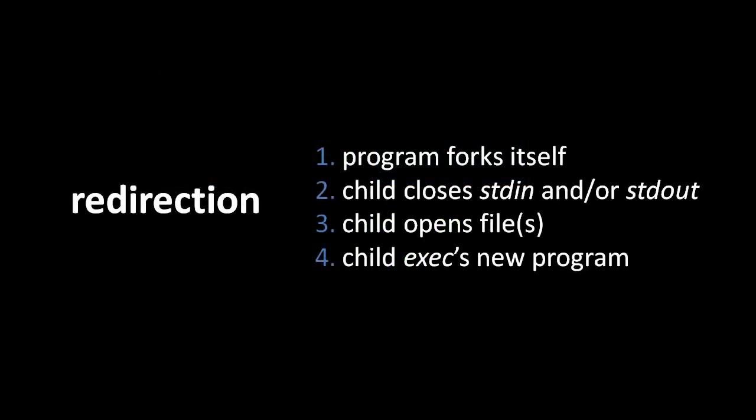Assuming you start with a program like the shell that has its standard in and standard out open to a terminal, if that program is going to spawn off another program by forking itself and then executing the new program, after the fork but before the exec it should close either standard in or standard out, or both, and then open one or two other files which will take over file descriptor 0 and 1. When you open a file in UNIX it uses the first available file descriptor number, so if you close file descriptor 0 and then open another file immediately after, you know it's going to be open on file descriptor 0.